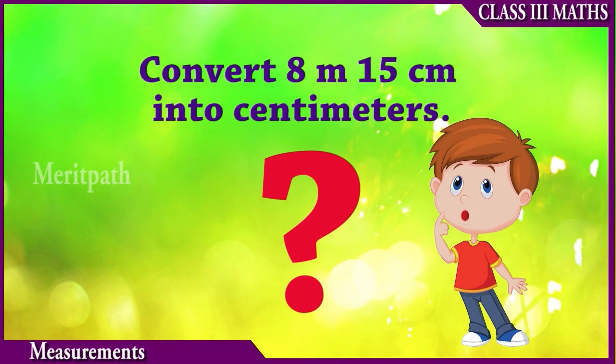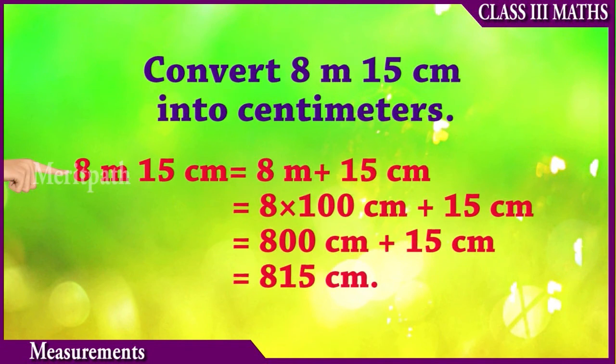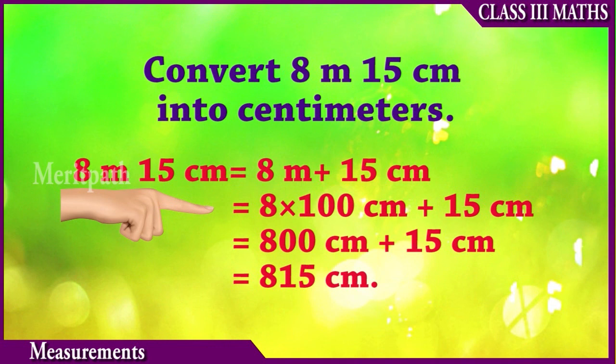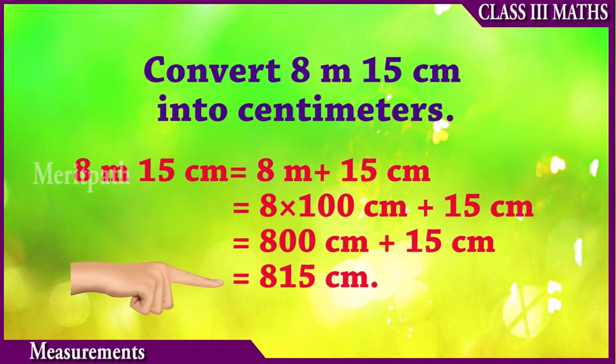Convert 8 meters 15 centimeters into centimeters. That is 8 meters and 15 centimeters. Each meter is equal to 100 centimeters, so 8 meters is equal to 8 into 100 centimeters, plus 15 centimeters. That gives 800 centimeters plus 15 centimeters, which is totally 815 centimeters.